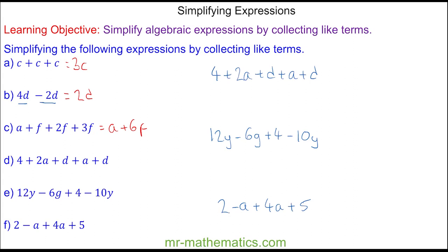For question d, we'll collect the a terms together, so we have 3a plus 2d plus 4, and you could write these three terms in any order. For question e, we have 12y take away 10y, which is 2y minus 6g plus 4.